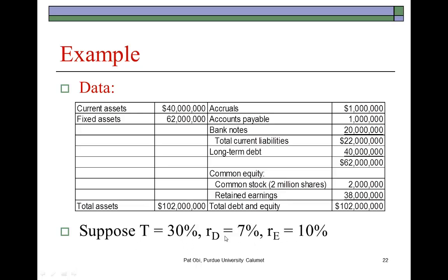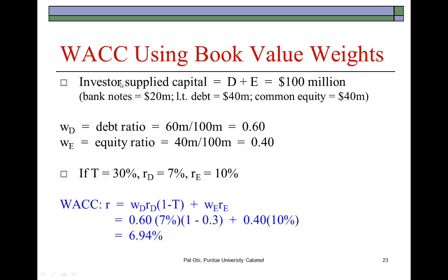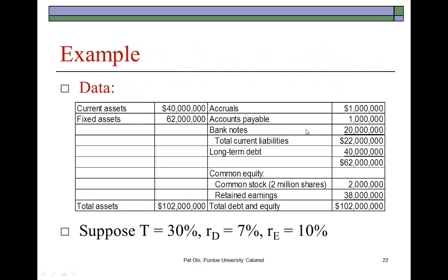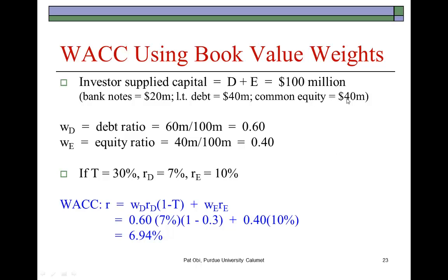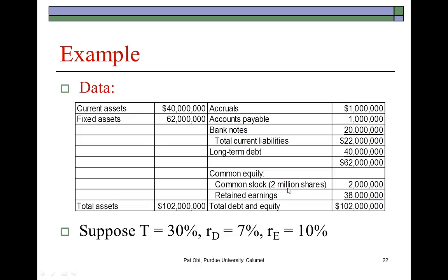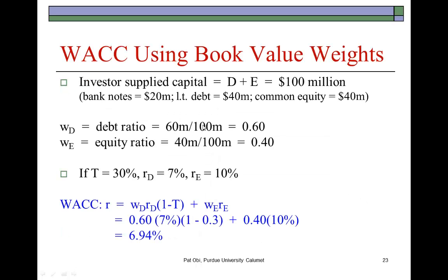The investor-supplied capital would be total debt of $100 million, comprising short-term debt in the form of bank notes of $20 million and long-term debt of $40 million. Common equity is $40 million, made up of common stock of $2 million and retained earnings of $38 million, combined $40 million. With that, we find their proportional amounts and plug in to find WACC to be 6.94%.